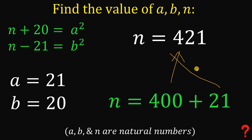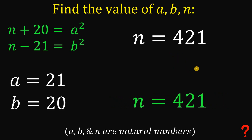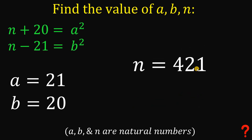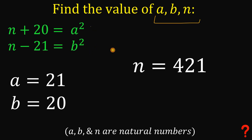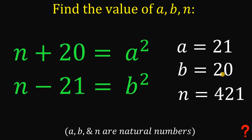So finally, n equals 421. The values of a, b, and n that satisfy both equations are: a equals 21, b equals 20, and n equals 421. And as always, we are done.